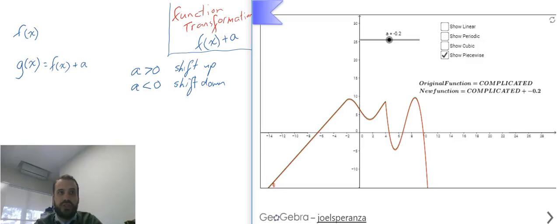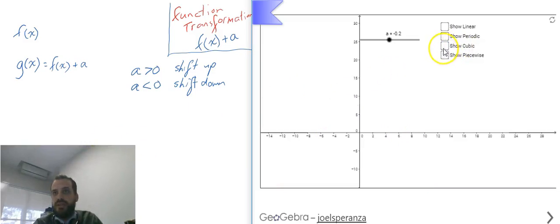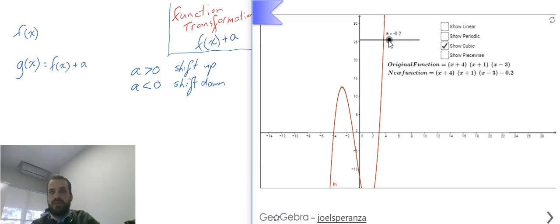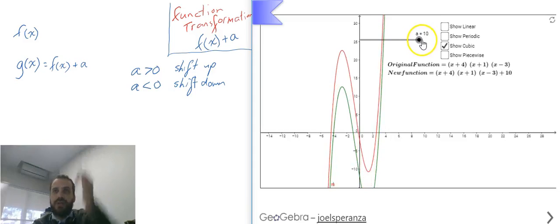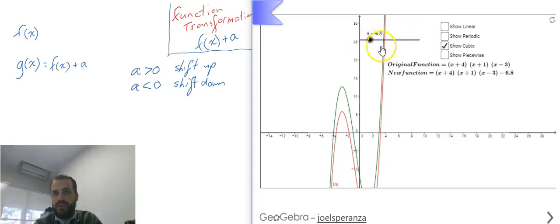Now, it doesn't matter what our function is. If we're adding something, it moves up. If we're subtracting something, it moves down. Here's a cubic—not a cubic you've seen before, but a slightly different one. If I add something to it, the whole thing shifts up. If I subtract something, the whole thing shifts down.